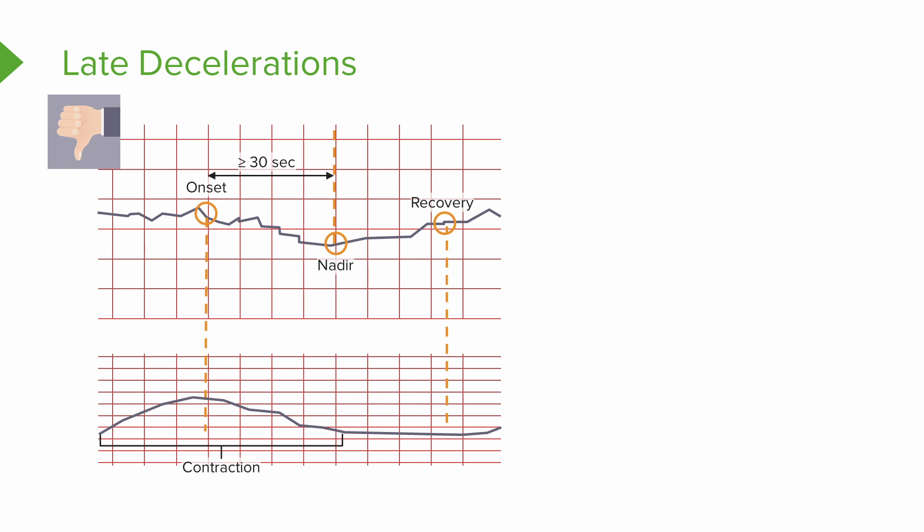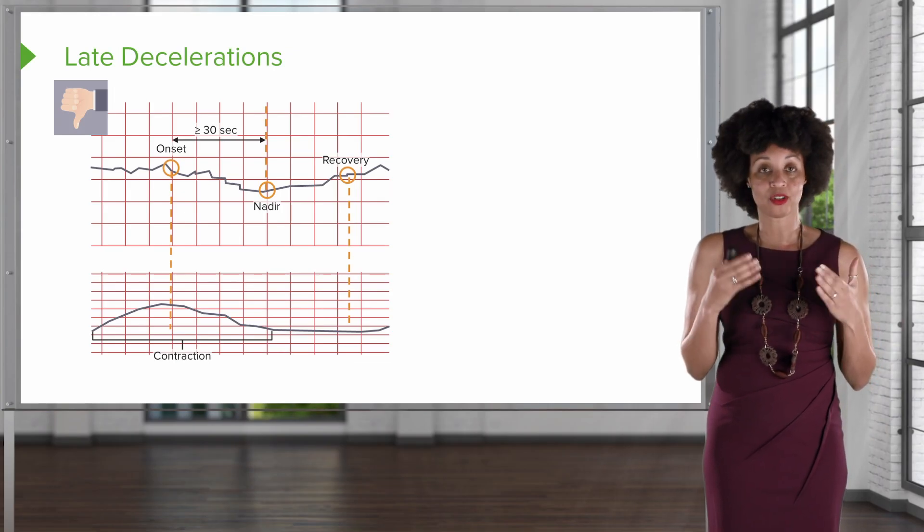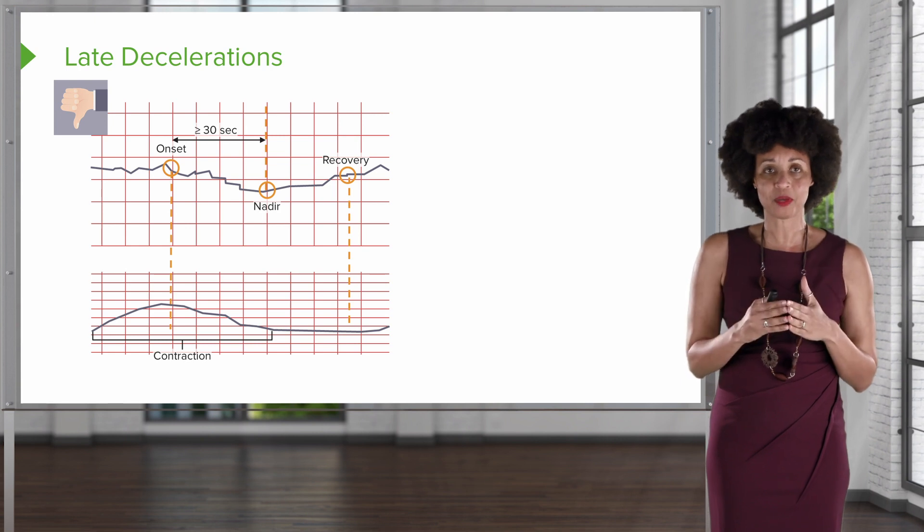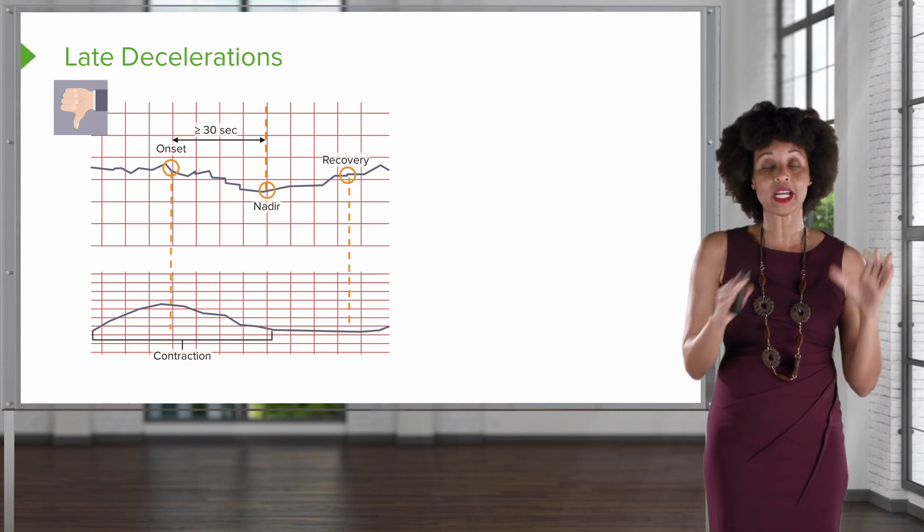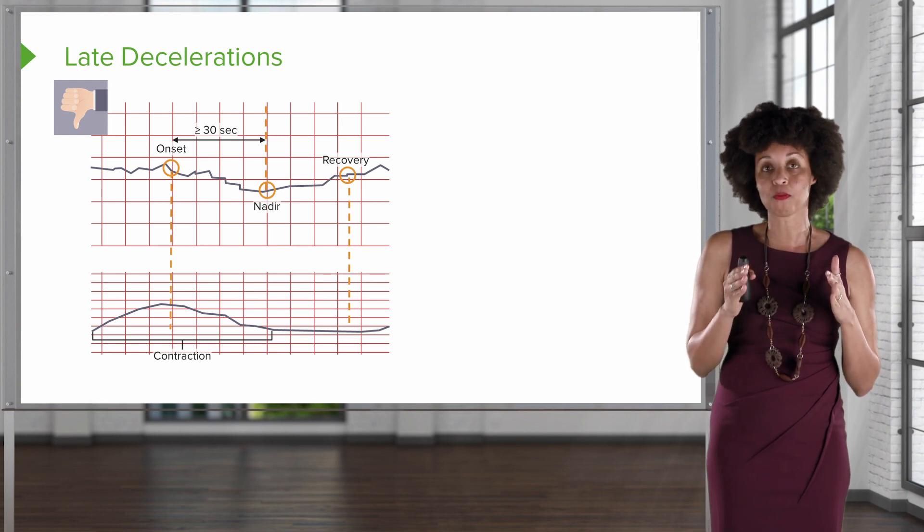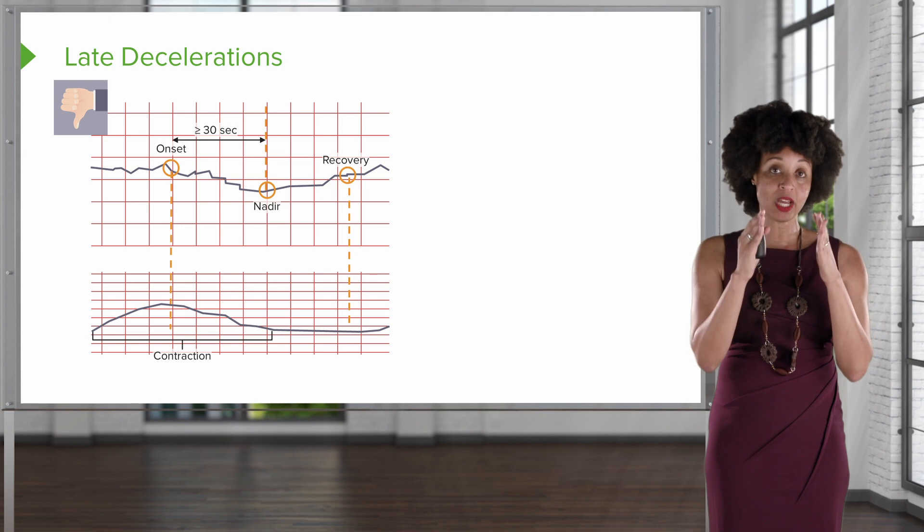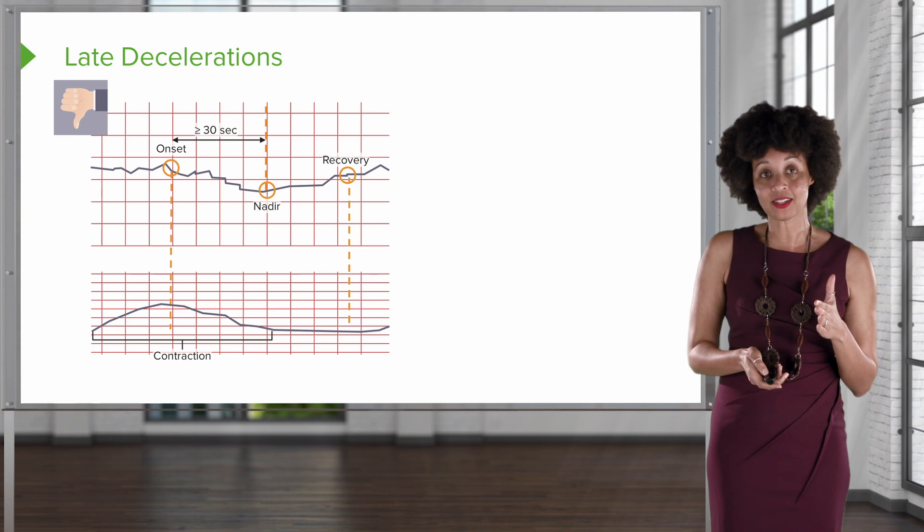It gets to the lowest point at the end of the contraction and the contraction is over and then finally the heart rate begins to come back up to baseline. So the response is delayed. That's telling you that perhaps the oxygenation status or the blood flow, something is not quite as it should be. This is a delayed response and it indicates that there is poor sufficiency in terms of blood flow between the placenta and the umbilical cord and the baby. This is a late deceleration and it's an indication of poor oxygenation.